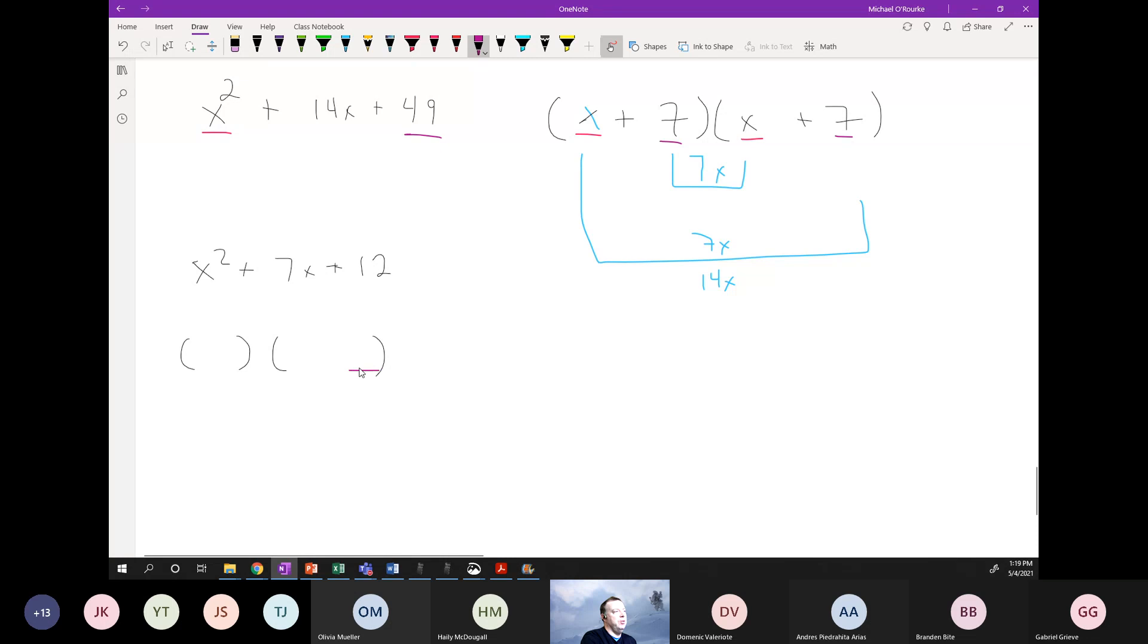So these two numbers should multiply to make this one. These two are going to multiply to make that one, and these guys are going to add to make the middle one. Okay, who wants to write it in chat for me?